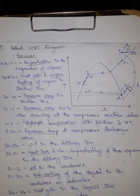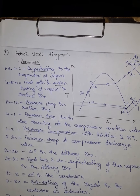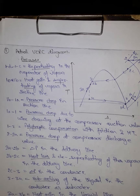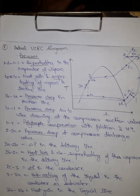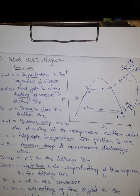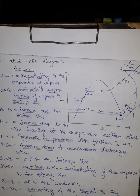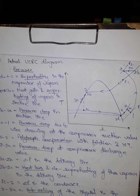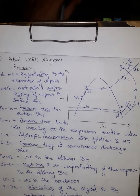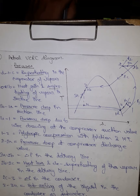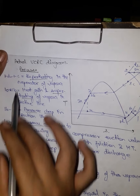Now we are going to study the actual BCRC diagram. The BCRC we have discussed till now was a theoretical cycle. In actual practice, there are various types of losses present in its operation — losses or gains that depend on the temperature difference between the refrigerant and the surroundings, due to compression which will not be isentropic but polytropic, and also due to friction and heat transfer occurring in those cycles.